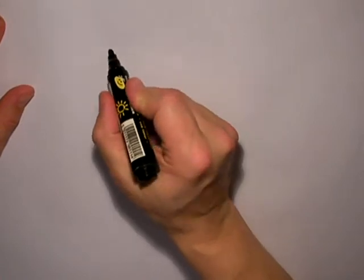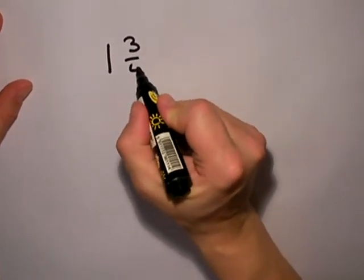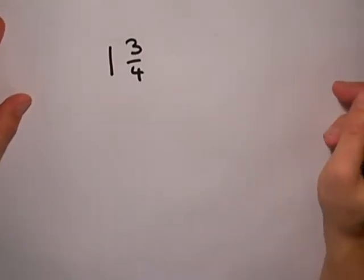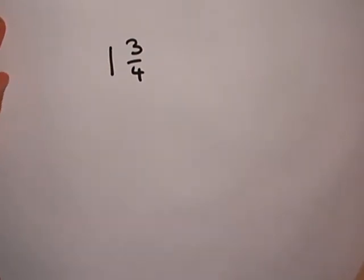I'm going to show you how to turn a mixed number into a top-heavy fraction. I'm going to start off with 1 and 3 quarters, and I'm going to turn that into a top-heavy fraction.